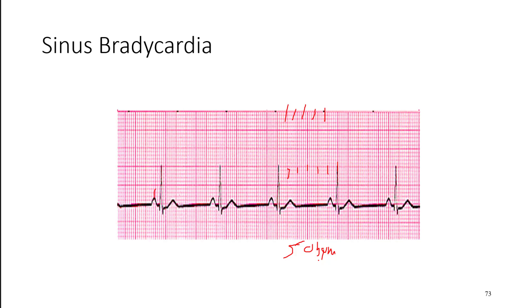Generally, sinus bradycardia is not a super concerning sign to see on an ECG unless someone has symptoms — that's how we view bradycardia; it's a symptom-driven condition in terms of how we manage it. There are instances where it's expected: someone who is highly trained has more efficient ventricles, more parasympathetic tone at rest, so a lower heart rate is not uncommon. But on an older, untrained patient who is normally not in bradycardia, it is a concern. Generally, sinus bradycardia is an abnormality but benign, since the conduction system is still doing its thing with a normal P wave before a normal QRS — it's just running a little slow.